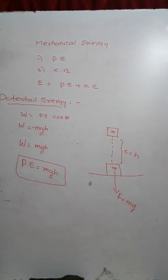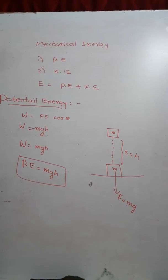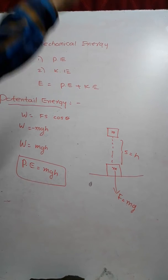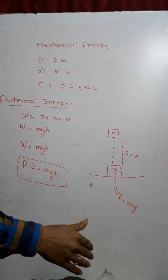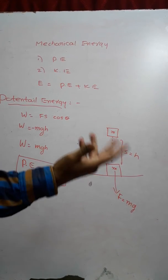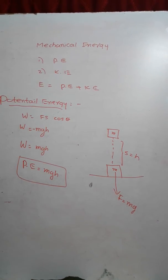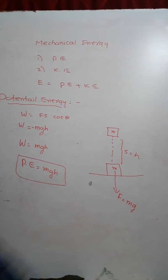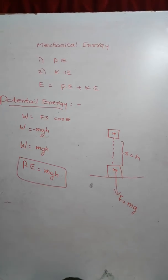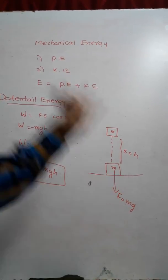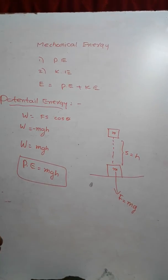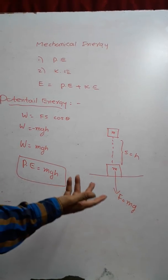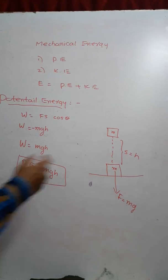For a freely falling body from a certain height, as the height decreases, its potential energy decreases. If a body is thrown vertically upwards, as the height increases, its potential energy increases.